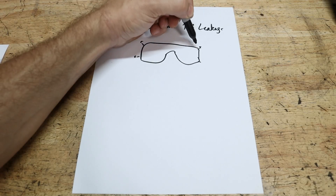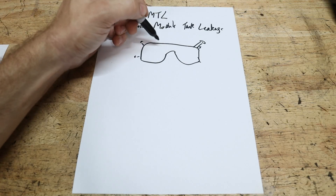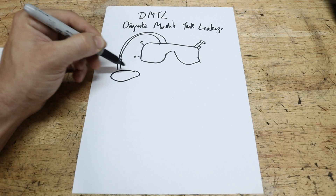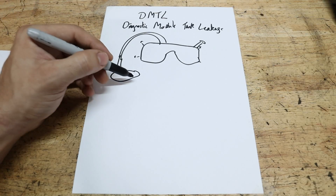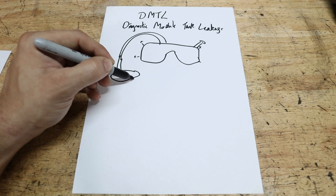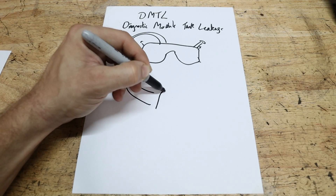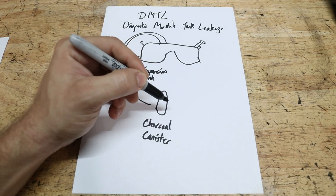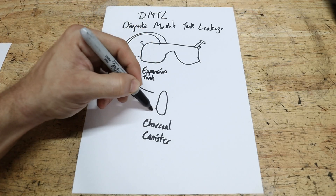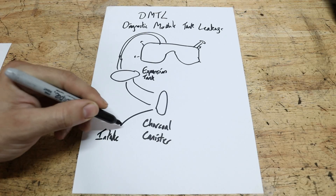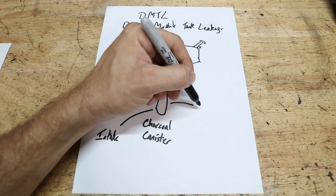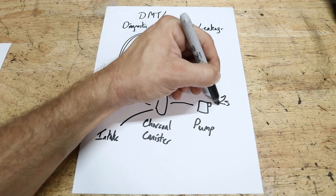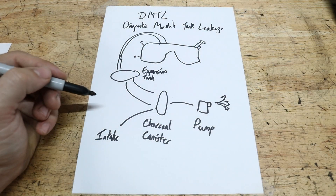The DMTL system works around your fuel tank and consists of a few different components. You'll usually have a couple of lines that come out of the tank and go to an expansion tank, where pressure is kept from the pump system. After that is a charcoal canister. One part goes to your intake to vent the gas vapors, and the other end goes to your pump, which gets air from the atmosphere. It's pretty simple when you look at it this way.